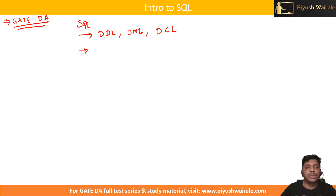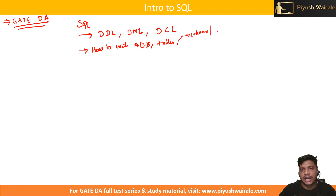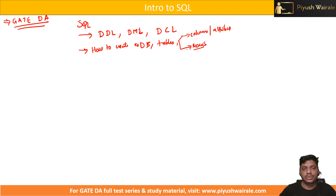In short, we are going to see how to create a table. First, how to create a database, then how to create tables. Then what are the columns — columns are basically attributes. Then we have rows. A table consists of columns and rows.